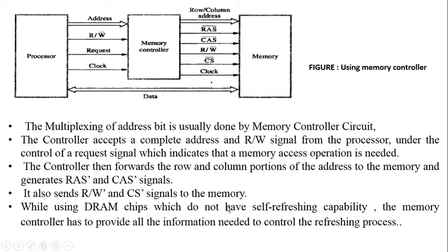DRAM chips do not have a self-refreshing capacity, so dynamic RAM needs periodic refreshing in order to retain its stored content for a long period of time. Since the DRAM has no self-refreshing capability, the memory controller has the responsibility of performing periodic refresh operations. The processor also passes clock information to perform operations, and all such information is received by the memory controller first and forwarded to the memory. After data is extracted, data transfer takes place directly between the processor and memory without the involvement of the memory controller.